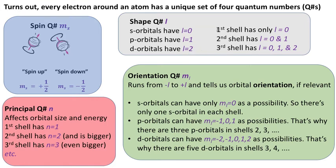And it turns out that the first shell has only l equals zero. That means it doesn't have any p orbitals or d orbitals. The second shell gets to have l equals zero and one, which means it has s orbitals and p orbitals.